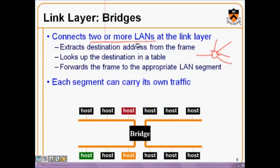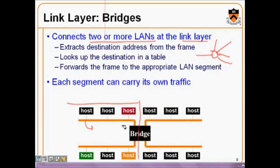A bridge connects two or more LANs at the link layer. So here is one particular LAN and here is another LAN, and both are connected by a bridge. One port connects to LAN 1 and one port connects to LAN 2. The bridge processes the packet — it looks at the packet and sees what is the destination.